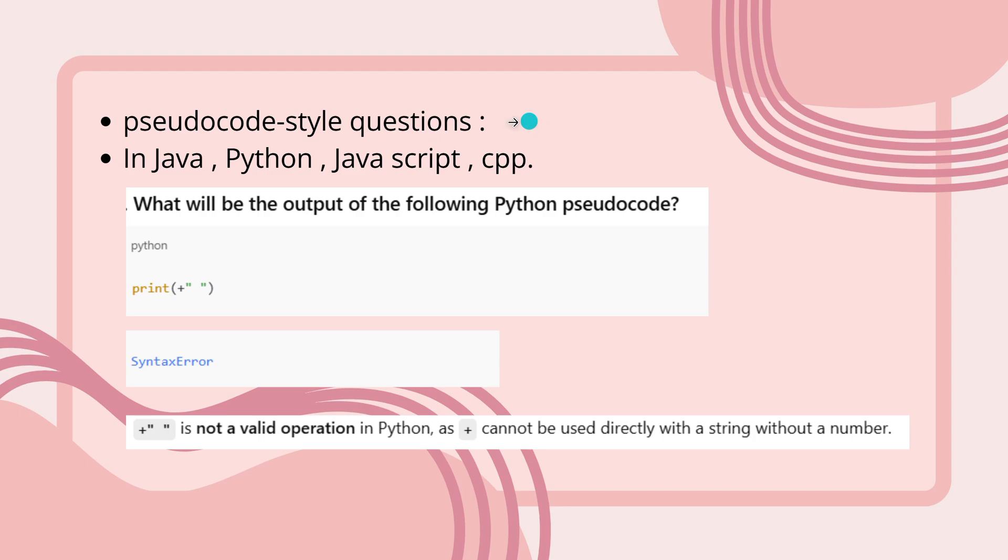Mainly in this technical round, you will get questions from pseudo-style questions in Java, Python, JavaScript, C++, and others. What will be the output of the Python pseudo-code? It will ask like this. Print(+ with empty quotations). In the options, they will give you choices, but the correct option is syntax error. Plus is not a valid operation in Python, as plus cannot be used directly with a string without a number. Plus cannot be used directly with a string without a number.